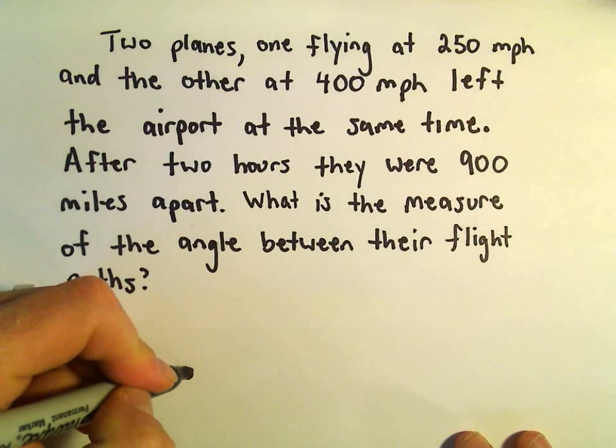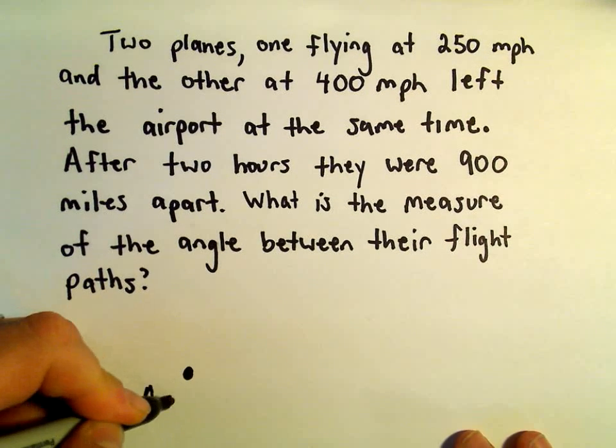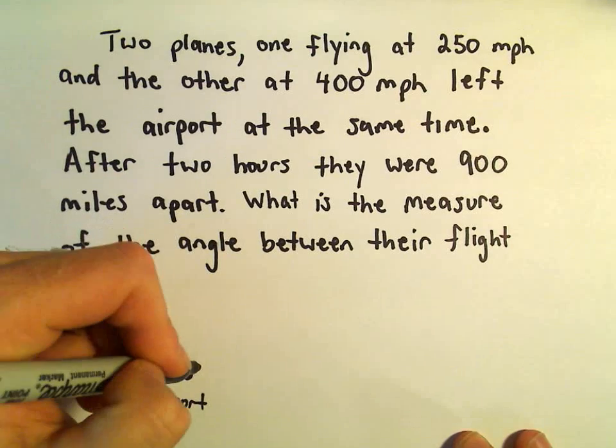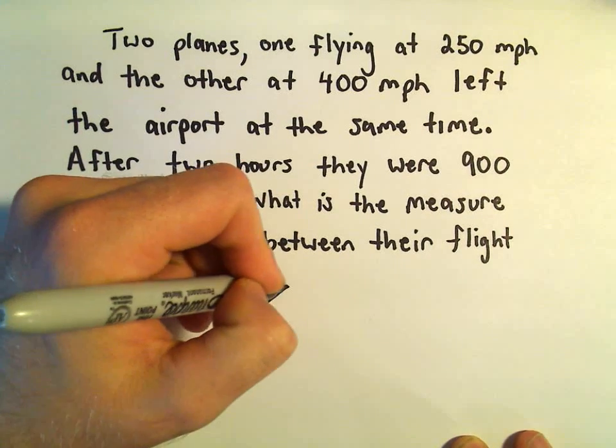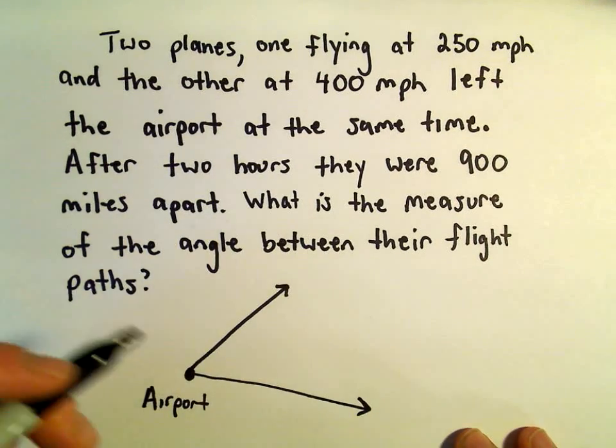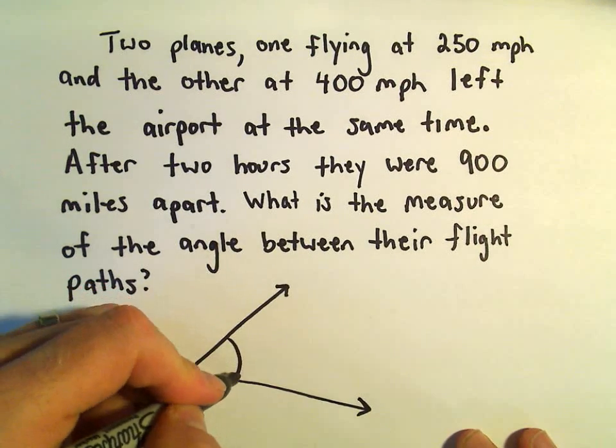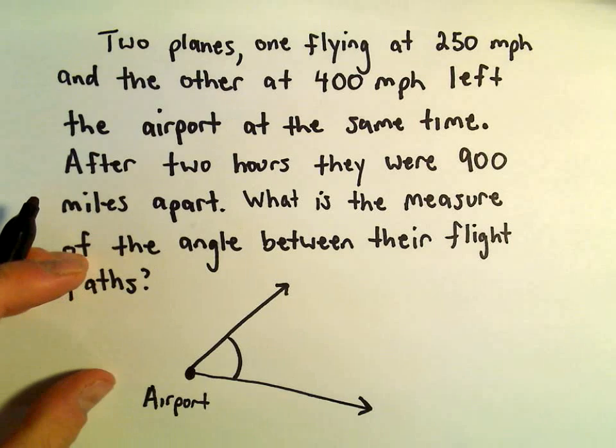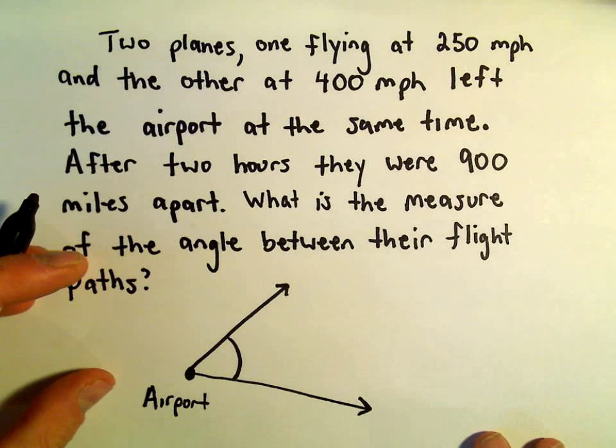All right, so nothing crazy. So here's the airport. One plane takes off going one direction, and another plane takes off going another direction, and we're trying to find that angle between them, their flight paths. So let's see, a couple things.